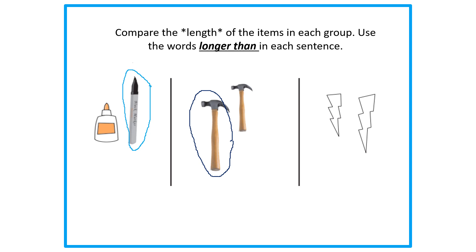Great thinking. Let's take a look at the last objects. The lightning bolts look very similar, so I'm going to have a hard time thinking about this one. I'm looking for the lightning bolt that is longer than the other. I found my choice. I want you to take a look at the lightning bolt and find the one that is longer than the other. I think that this lightning bolt is longer than this lightning bolt. Do you agree or disagree?